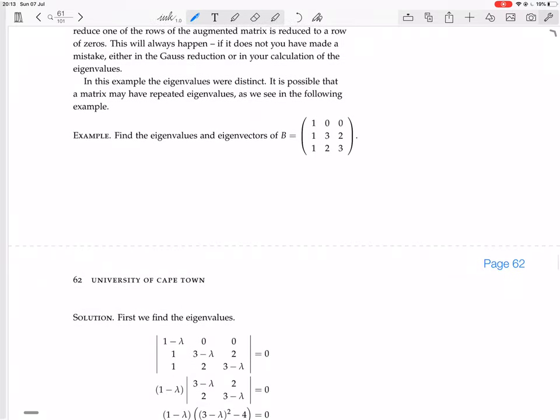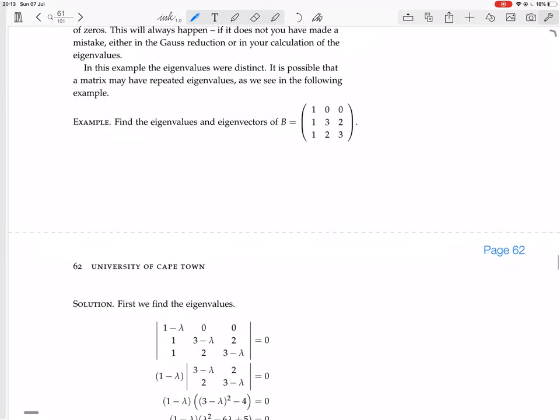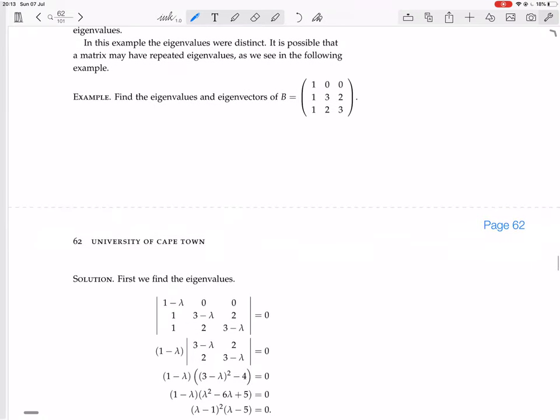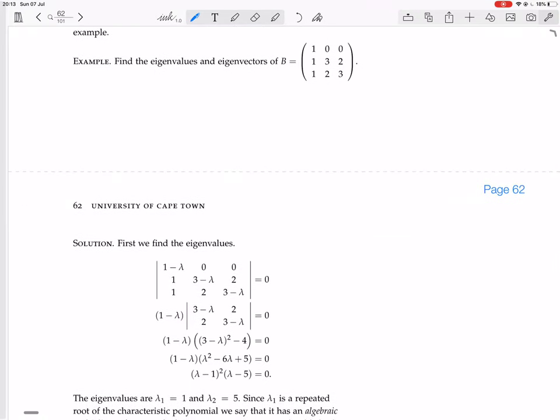You've got to find the characteristic polynomial. You go B minus lambda I, and that's going to give you this matrix. You have B, and then on the diagonal you have minus lambdas. You're going to find the determinant, so you could expand along the first row. You get 1 minus lambda, and then the determinant of what remains, the minor.